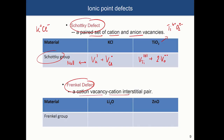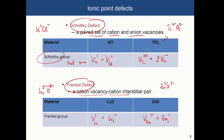A Frenkel defect is a cation vacancy and cation interstitial pair. In lithium oxide (Li₂O), lithium carries 1+ and oxygen carries 2−, giving two lithium vacancies compensated by a lithium interstitial. In zinc oxide (ZnO), zinc carries 2+ and oxygen 2−, so the Frenkel defect is a zinc vacancy plus a zinc interstitial. In both cases, because it is a pair, this is called a Frenkel pair.